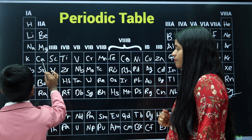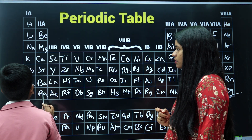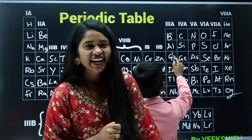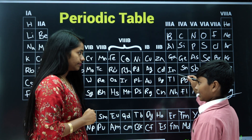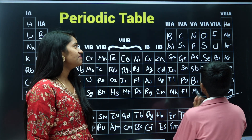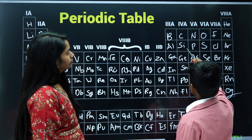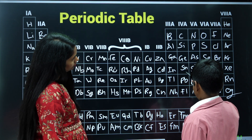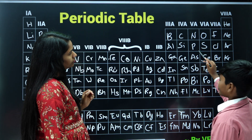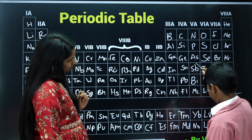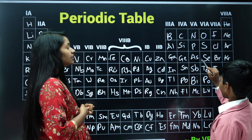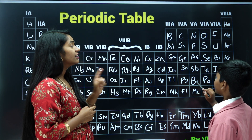Loudly — 2A group elements. Very good. 3A group elements? Boron, aluminium, gallium, indium, thallium. Arsenic, tin, bismuth, antimony, bismuth.